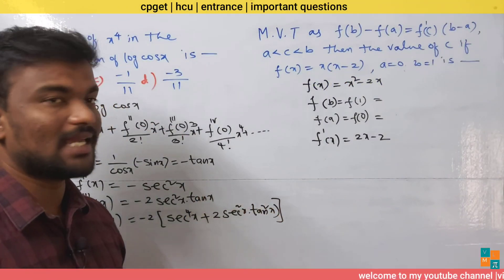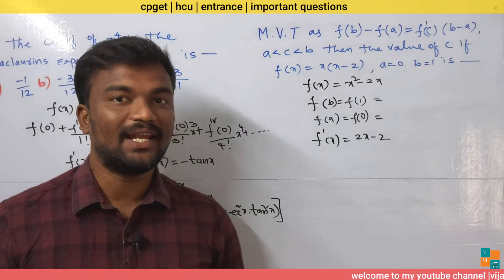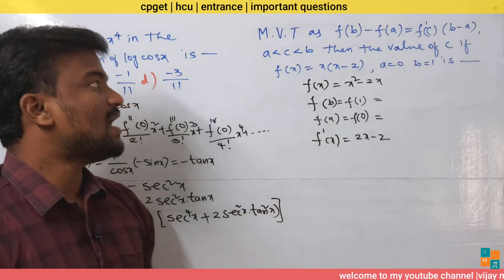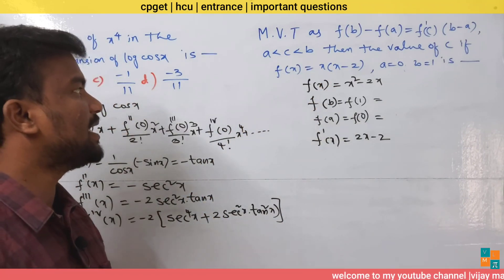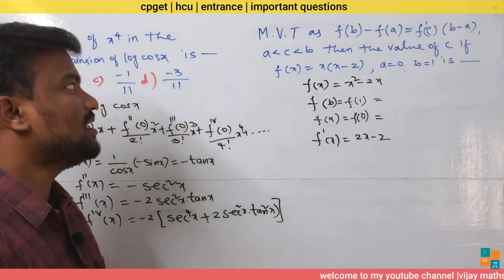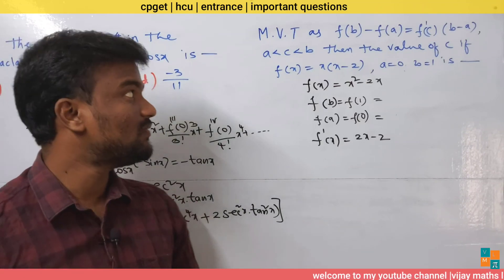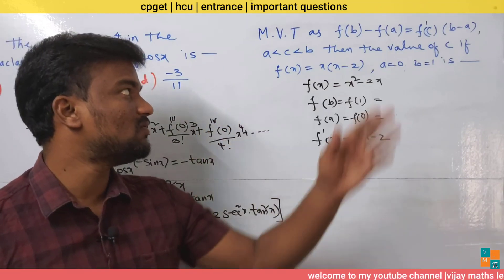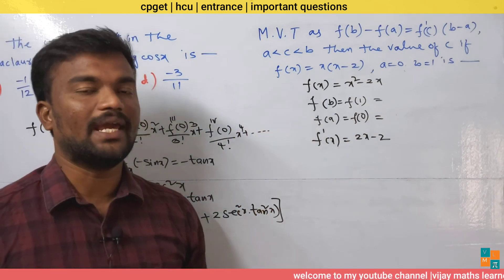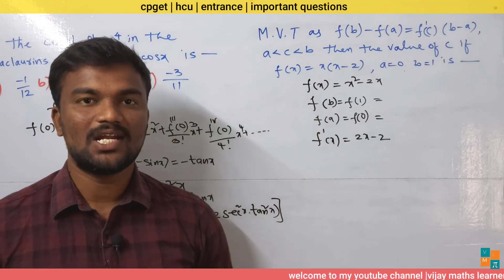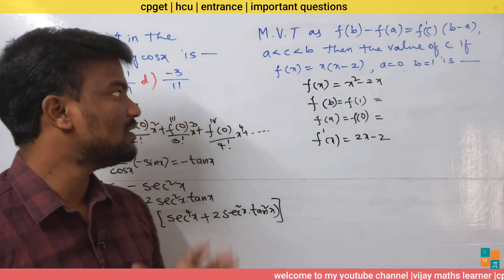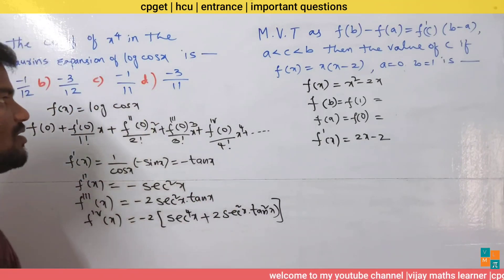Third question: The Mean Value Theorem states f(b) − f(a) equals f'(c)·(b − a), where a < c < b. Find the value of c if f(x) equals x(x − 2), with a equals 0 and b equals 1. We need to find the value of c.